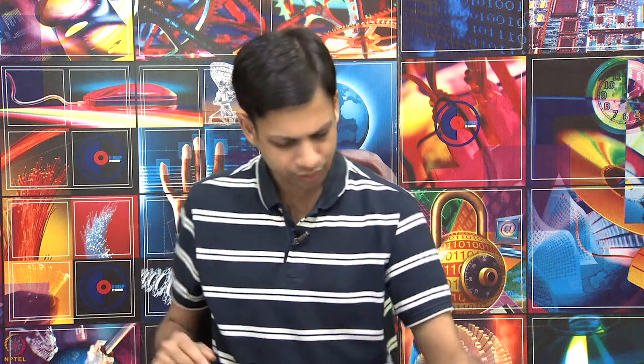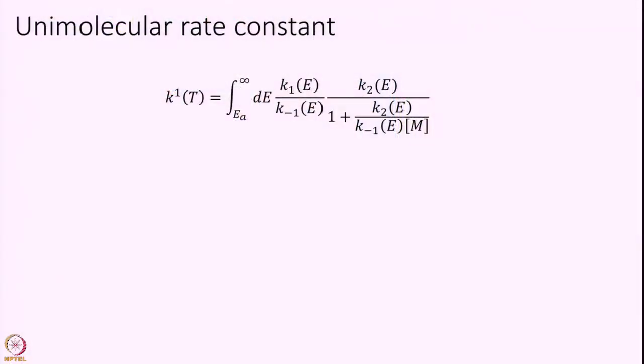R, R and K again are Rice, Ramsberg and Kassel, in trying to resolve the differences we get with experimental data. So, what is a quick recap of what we had discussed in the last module. What is the problem? We have unimolecular decay — the overall reaction looks like this: some A going to B, only one reactant, and the mechanism proposed by Lindemann was as follows.